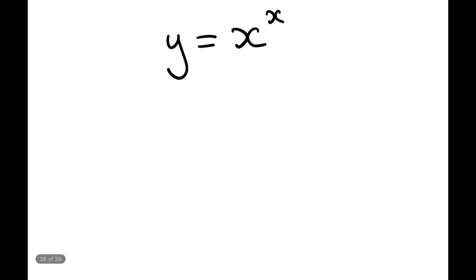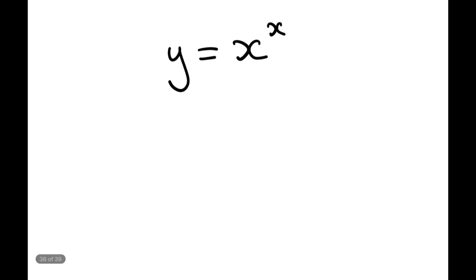So we're going to write y equals x to the power of x. There's no rule we can straight away apply to this. We have the chain rule, the product rule, and the quotient rule at our disposal, but none of those apply here — we don't have two functions of x, so we can't use the product rule, chain rule, or quotient rule. We have to get the equation into a form that can be differentiated.